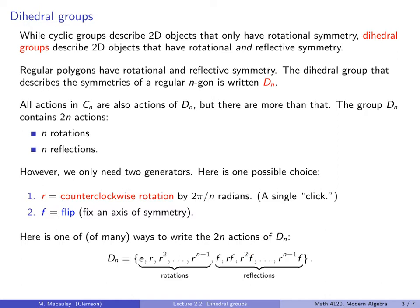In other words, R² times F is going to be F times some other power of R. Finally, some books — actually probably more than half — write this group D_N as D_{2N}. I don't know why this is so common; I think D_N is a lot more natural because it is the set of symmetries of a regular N-gon. But this choice is motivated by the fact that there are 2N elements. Throughout this course I will use the convention of D_N.